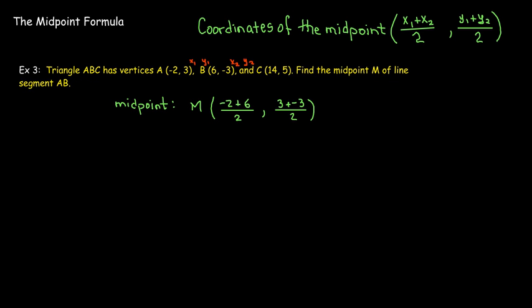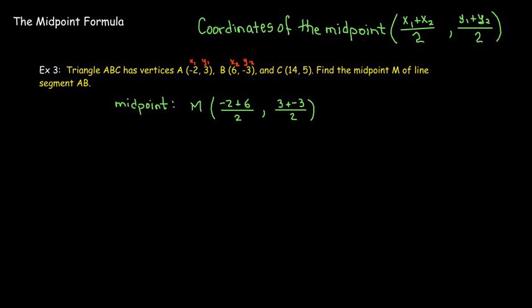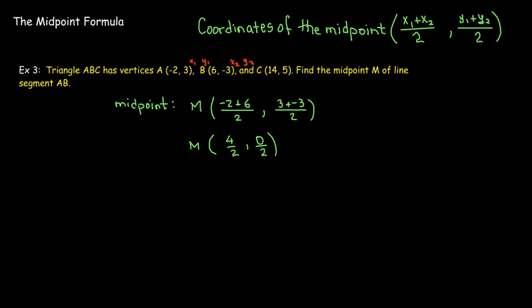Taking the average of the x-coordinates: (-2 + 6) / 2 = 4 / 2 = 2. Taking the average of the y-coordinates: (3 + (-3)) / 2 = 0 / 2 = 0. So the midpoint of segment AB is (2, 0).